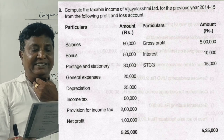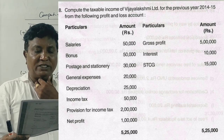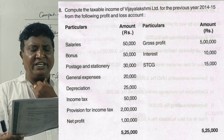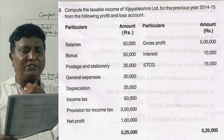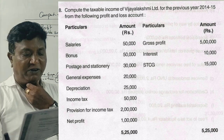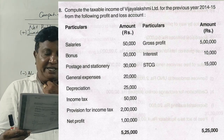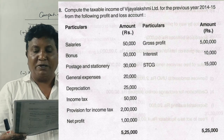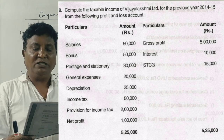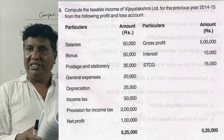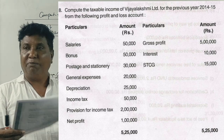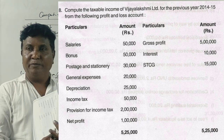The profit and loss account includes: salaries, bonus, postage, stationery, general expenses, depreciation, income tax, provision for income tax, and net profit on the debit side. On the credit side: gross profit, interest, and short-term capital gain (STCG).